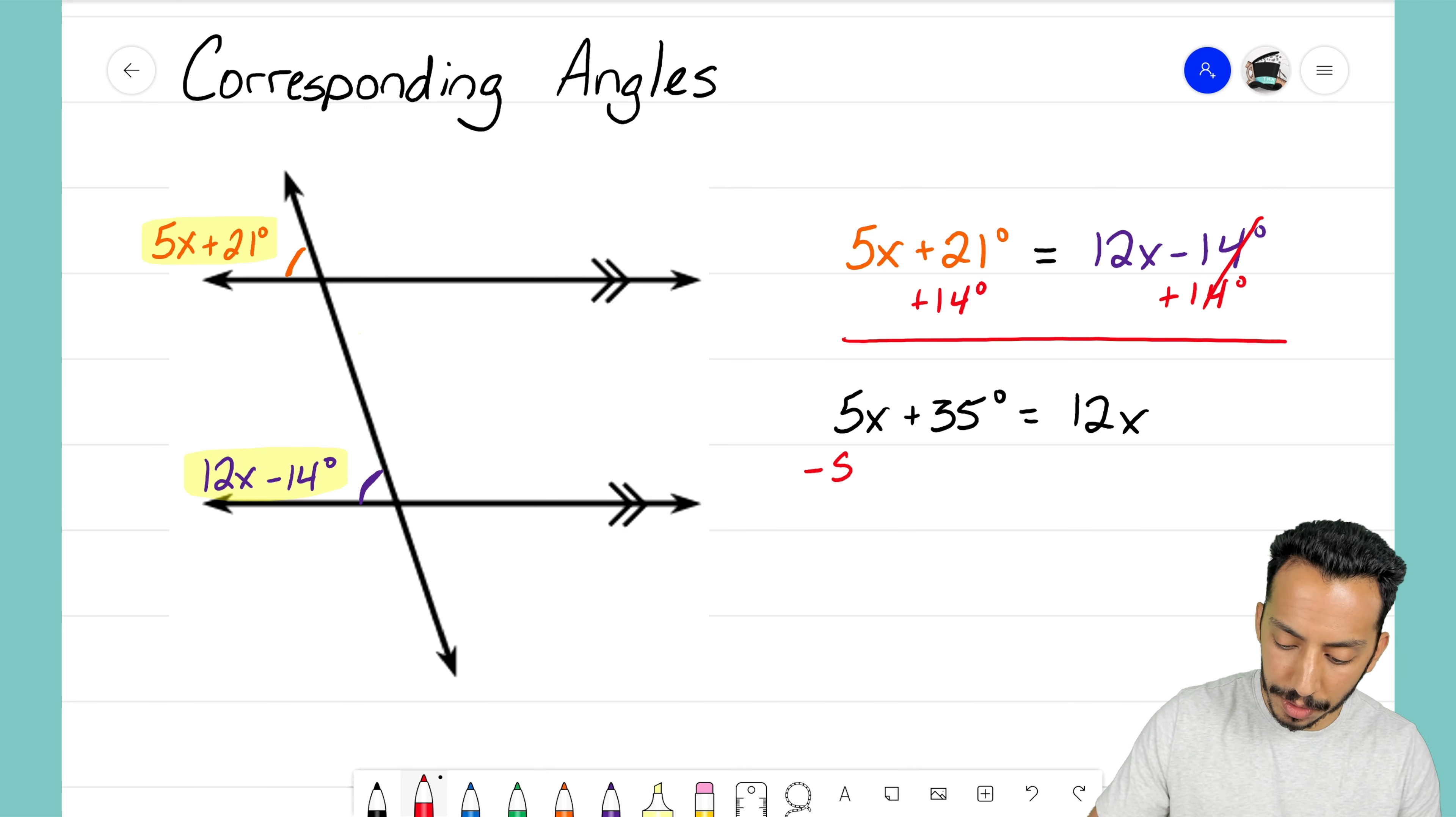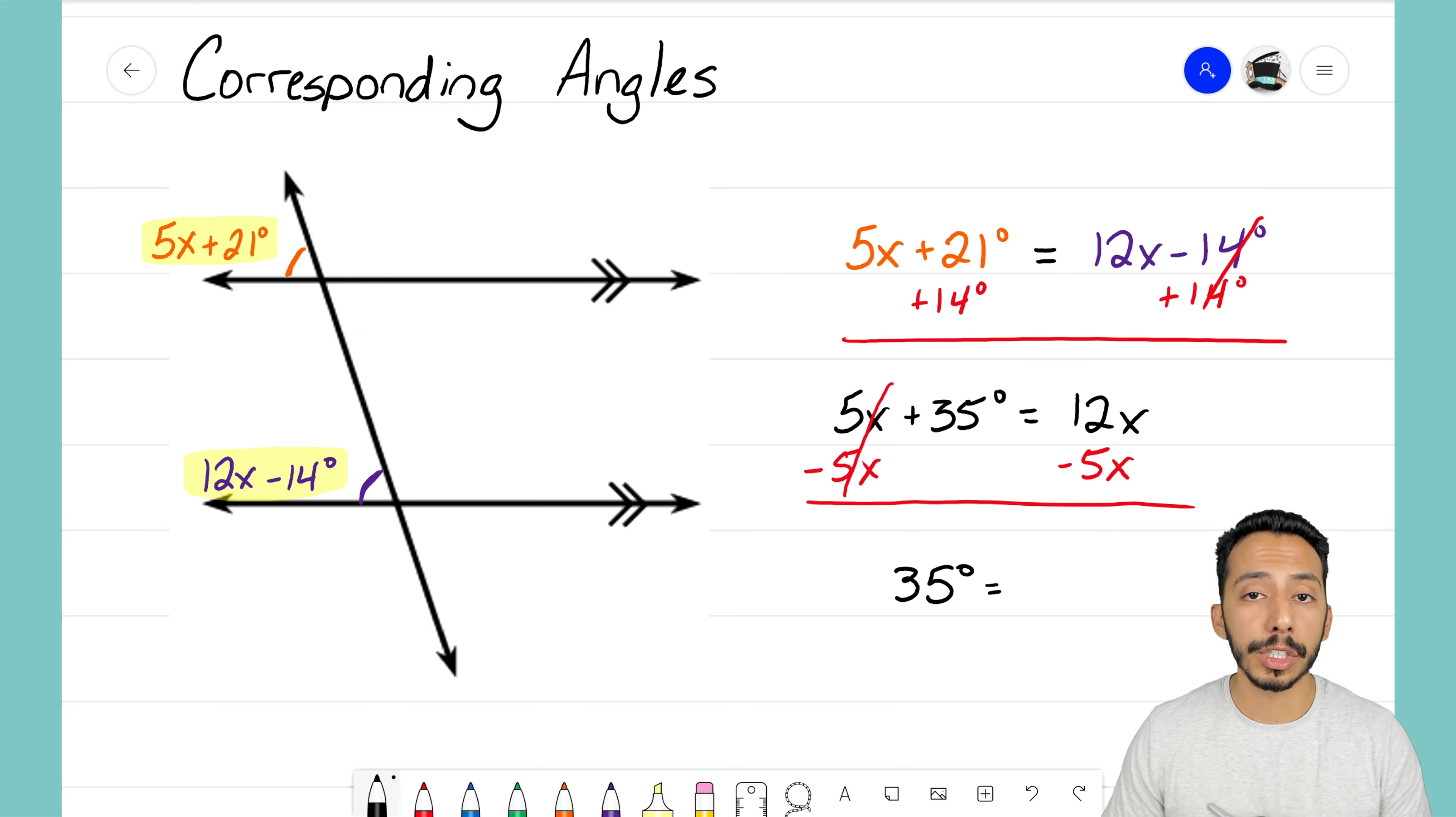I got to move it now to the right-hand side. So I'm going to subtract 5x on both sides. Those are going to zero out on the left-hand side. All I have here is 35 degrees equaling 12x minus 5x. That is 7x.